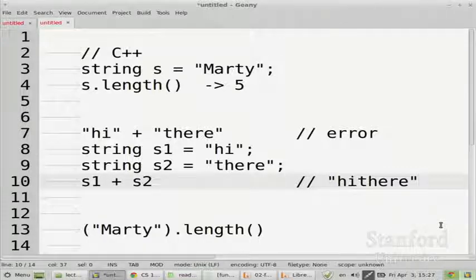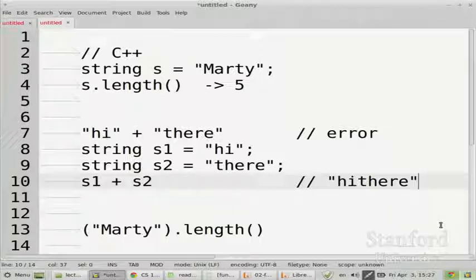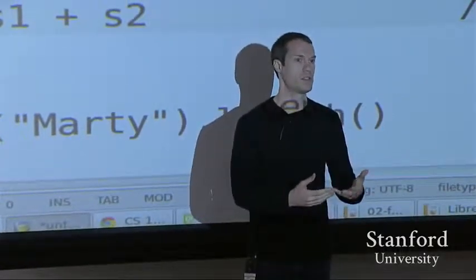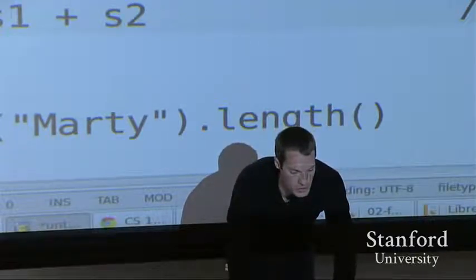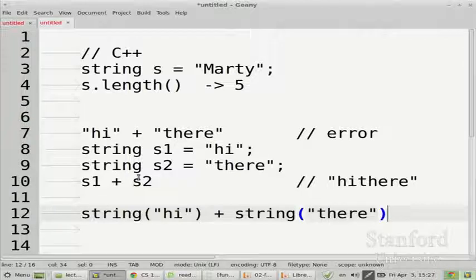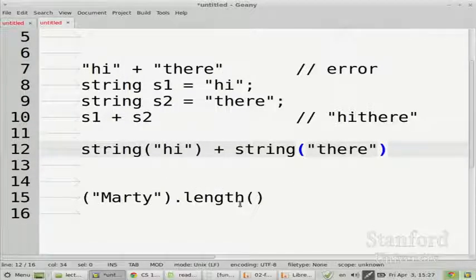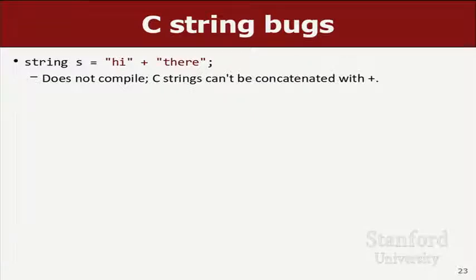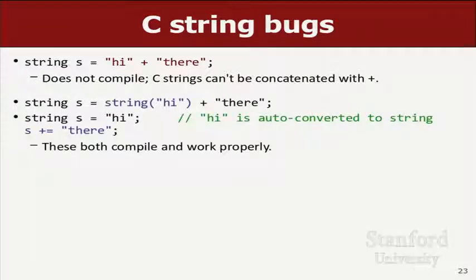So could you also write string parentheses high in parentheses, plus string parentheses there in parentheses? Right, another thing you can do if you don't want to type all these lines, you can explicitly force a conversion into the C++ style by writing the word string in front of something. So if you said string parentheses high plus string parentheses there, it's kind of like a type cast. You're forcing it to convert those into C++ strings, then it will let you do the plus operation on them. Or even just one of the two being C++ string, if the other one isn't, then the one that is kind of is able to promote the weak one into its type, and it works.